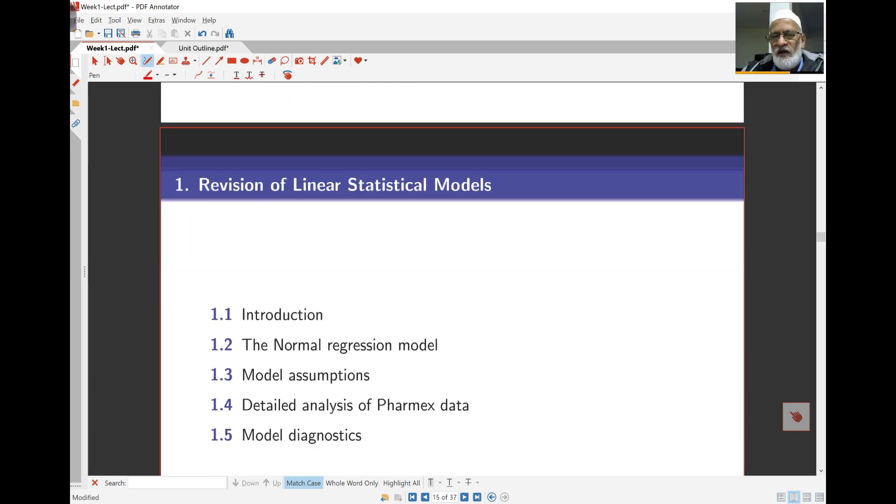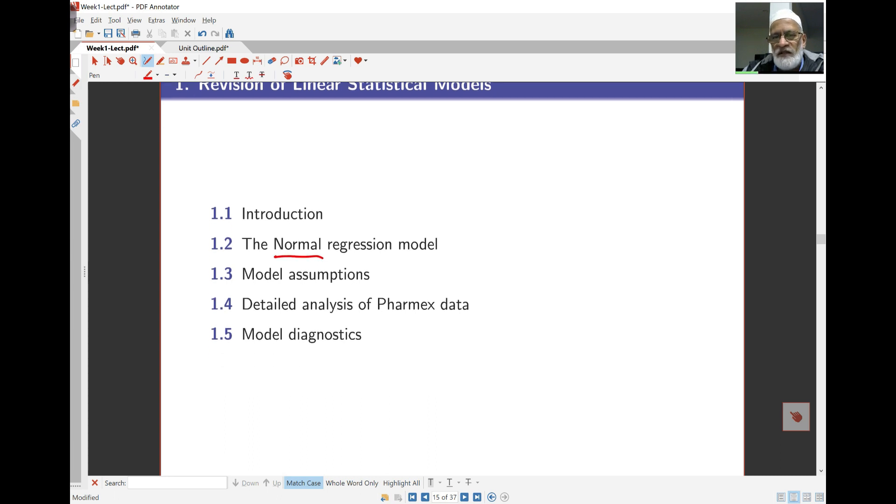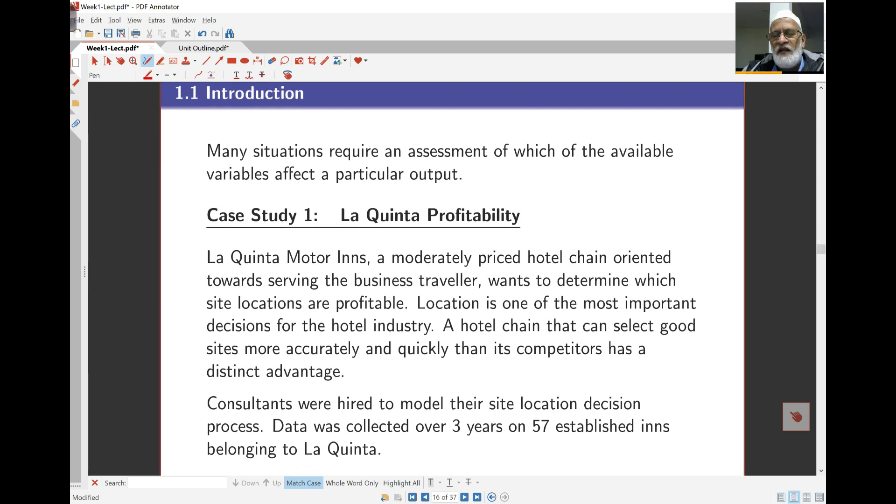We'll start off by looking at what we call linear stats models. The usual one that's first met is what we call normal regression where we're assuming something about the distribution of data being normal. We'll cover the details of how this actually works out in practice. First of all, here's some examples. There are many situations where we're trying to find the relationship between two or more variables.